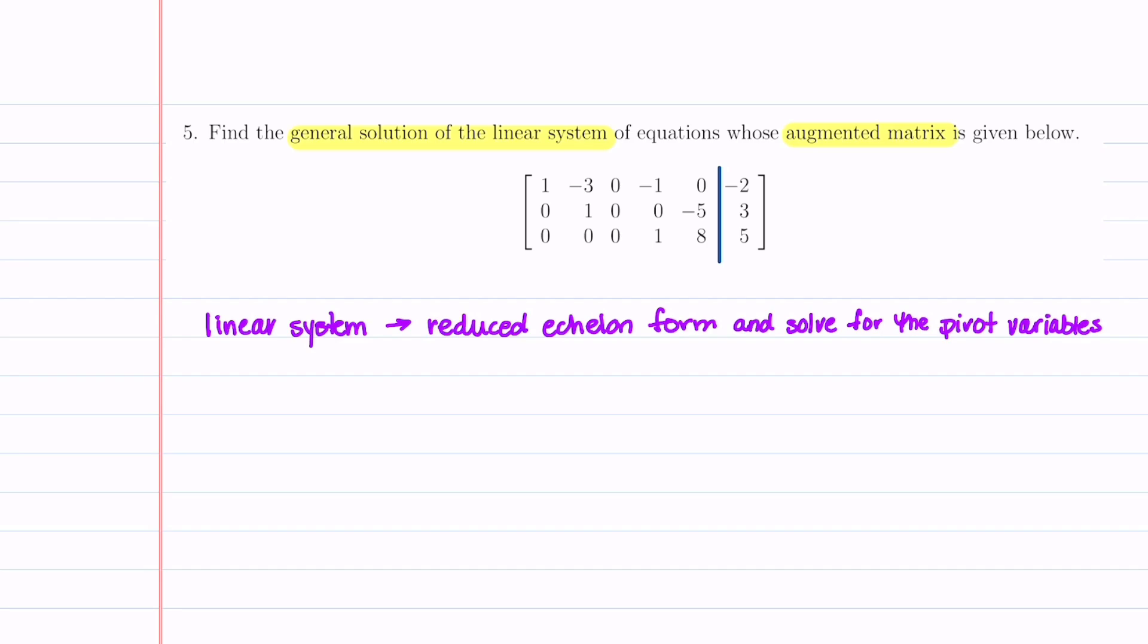To solve this problem and find the general solution, what we're going to do is we're going to take our linear system and we're going to put it in reduced echelon form, and then we're going to just solve for our pivot variables. Let's go ahead and let's do that. I'm going to start by copying down our matrix. That's always a good idea.